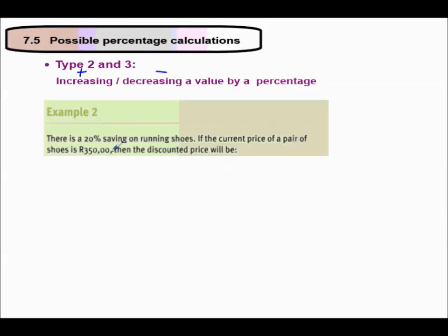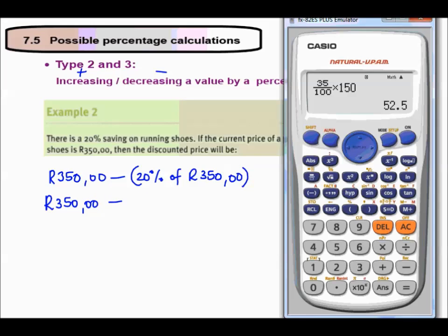There's a 20% saving on running shoes. If the current price of a pair of shoes is 350 rand, then the discounted price will be... So the shoes originally cost 350 rand. There is a reduction of 20%. So we're going to minus 20% of 350 rand.